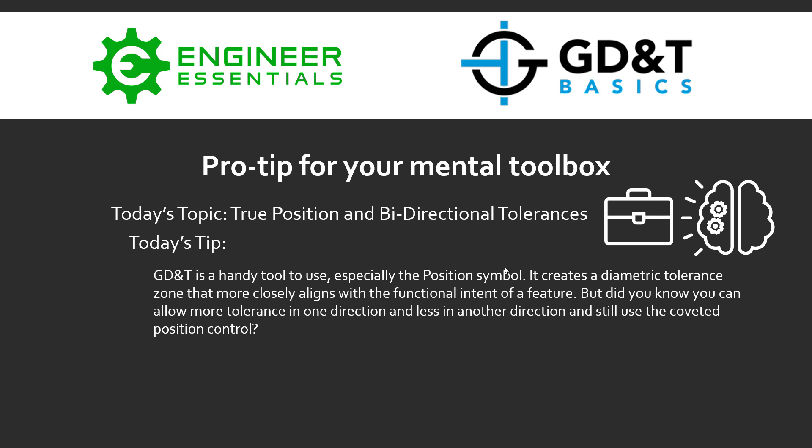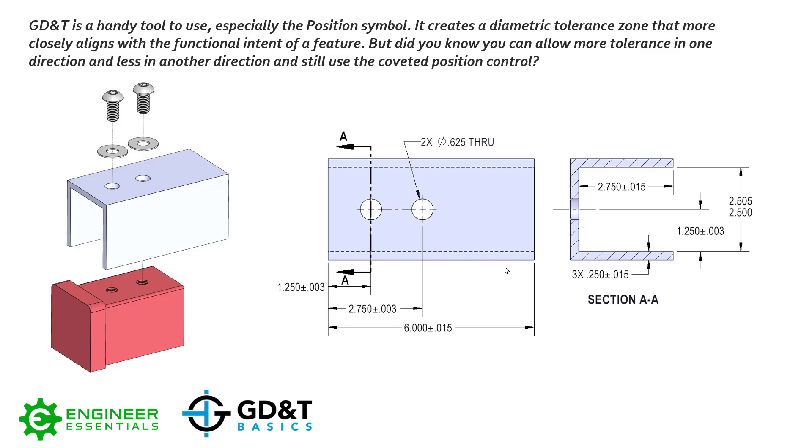But did you know you can allow more tolerance in one direction and less in another direction and still use the coveted position control? Let's dig into what I mean here. We have a simple part, an aluminum channel with two through holes, and a red block underneath with two tapped holes. Obviously, the fasteners are going to go through the clearance hole and tap into the red block.